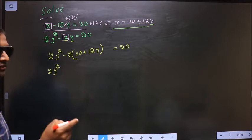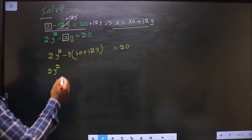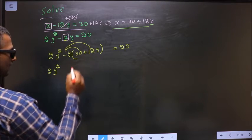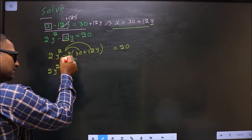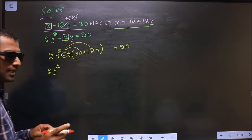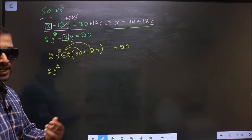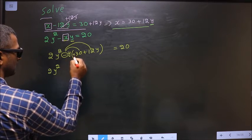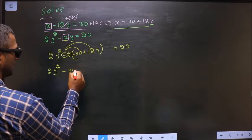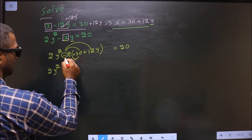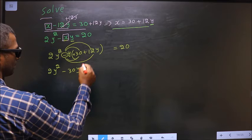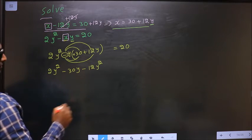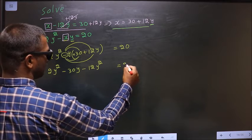To simplify further, I have to open up this bracket in this way. Many skip the negative sign. You should not forget you are multiplying with minus y. Remember that. So minus into plus, you get minus 30 times y. Now when you multiply these two, minus 12y square. Equal to 20.